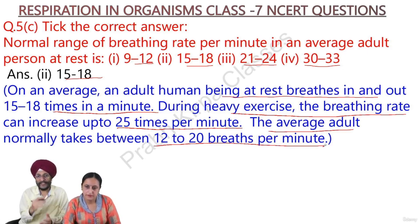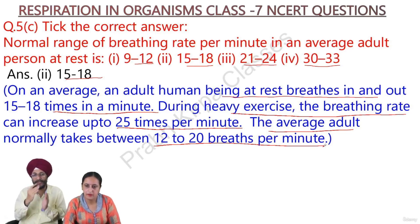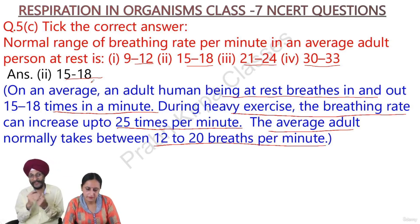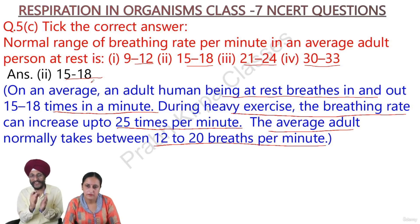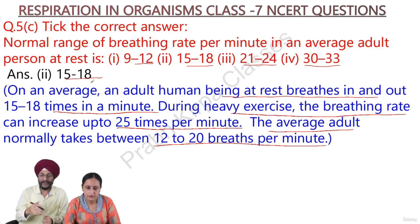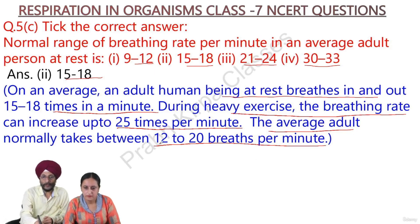The question asks for the normal range of breathing rate for an average adult person at rest. The answer is that an average adult normally breathes 12 to 20 times per minute.